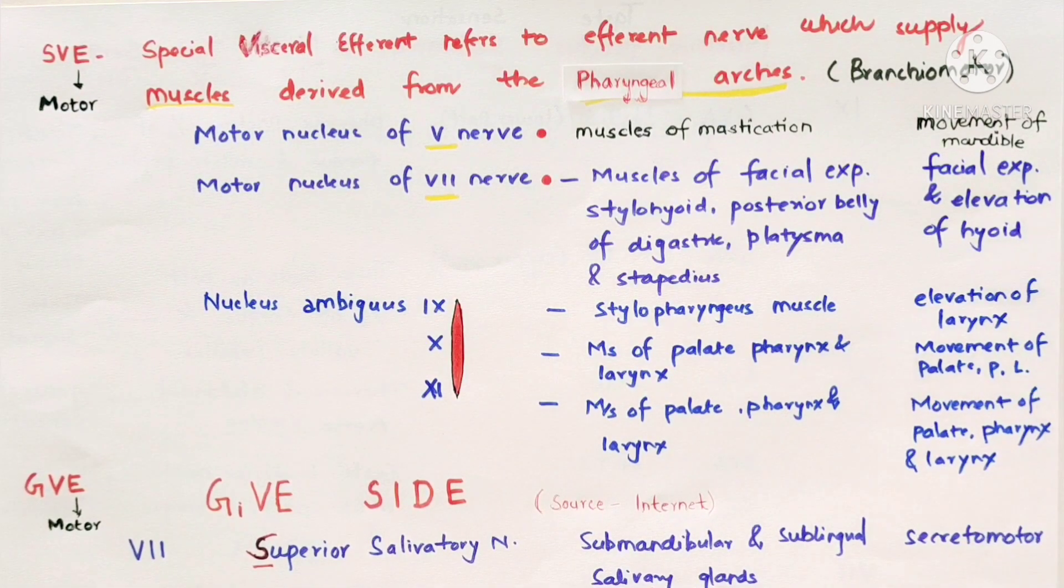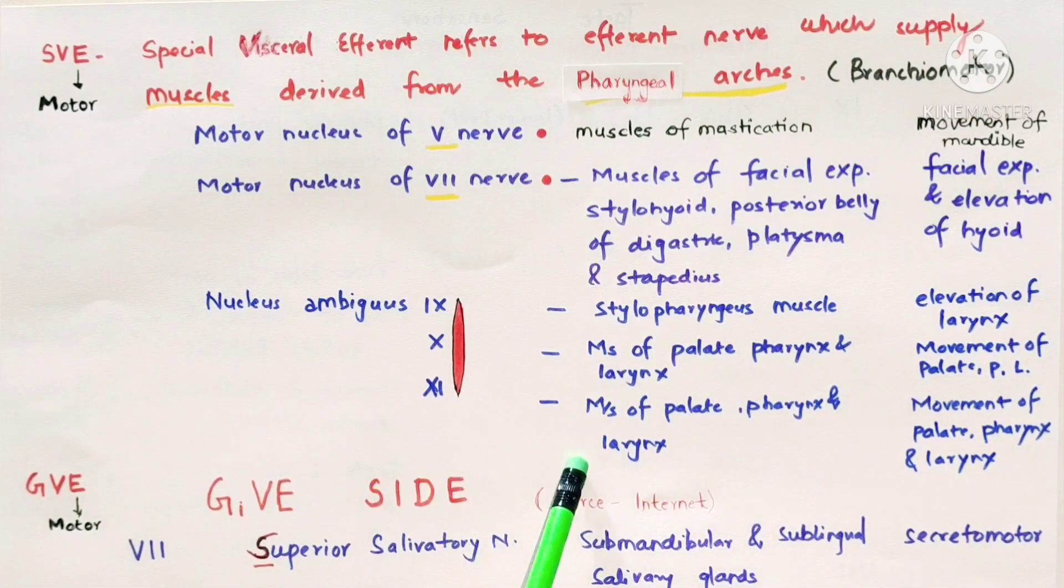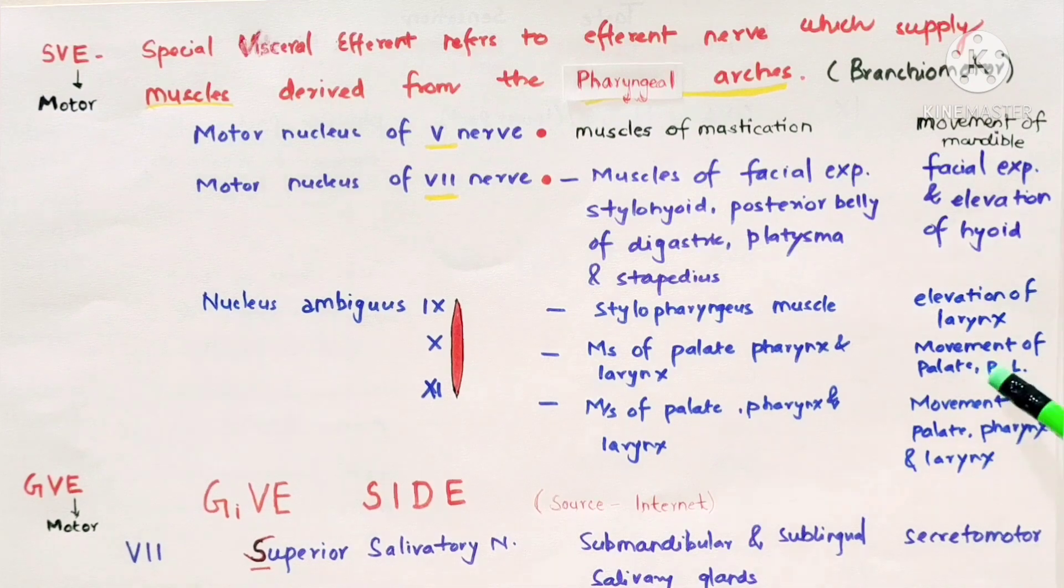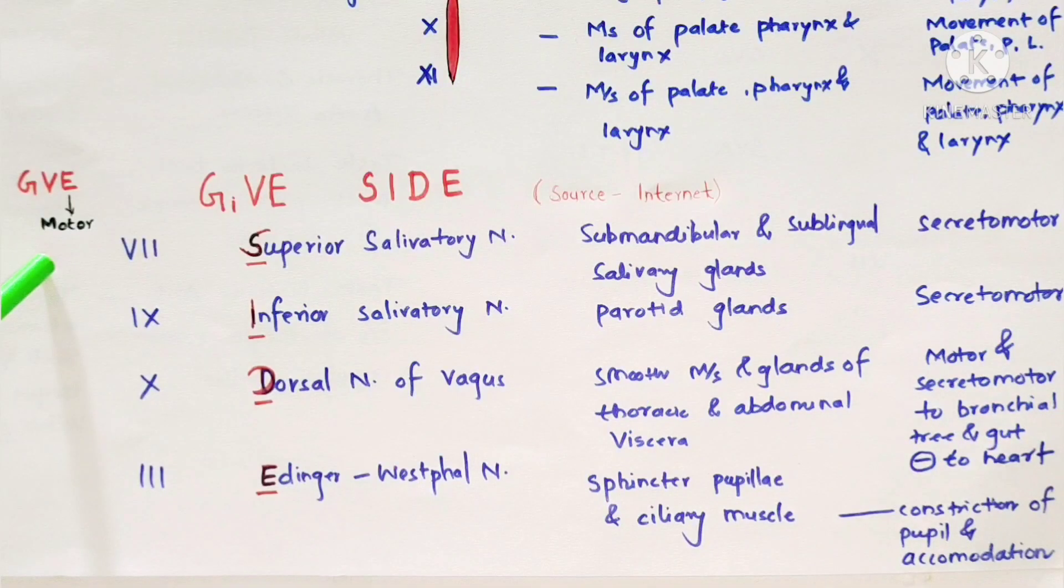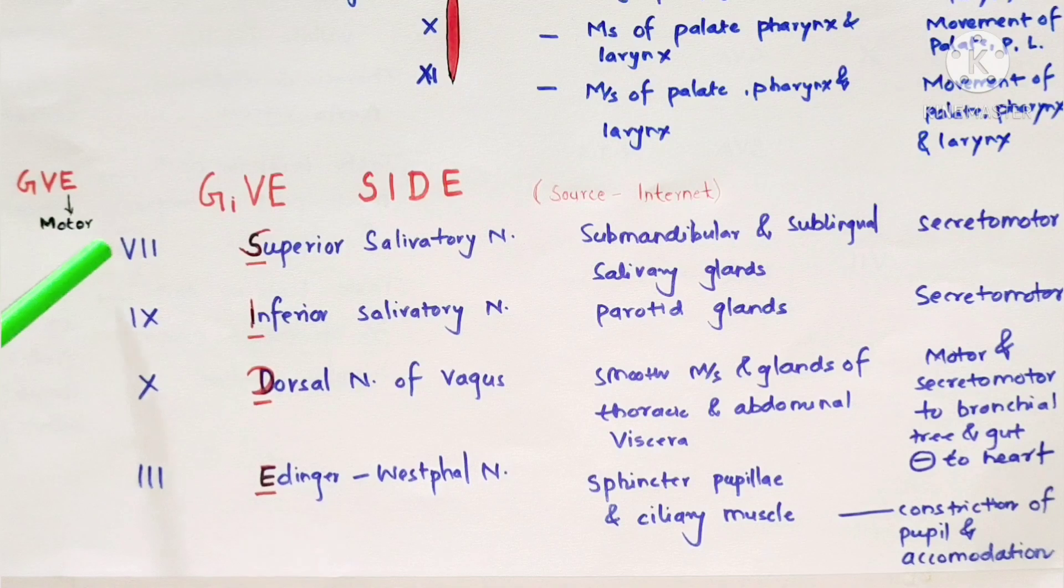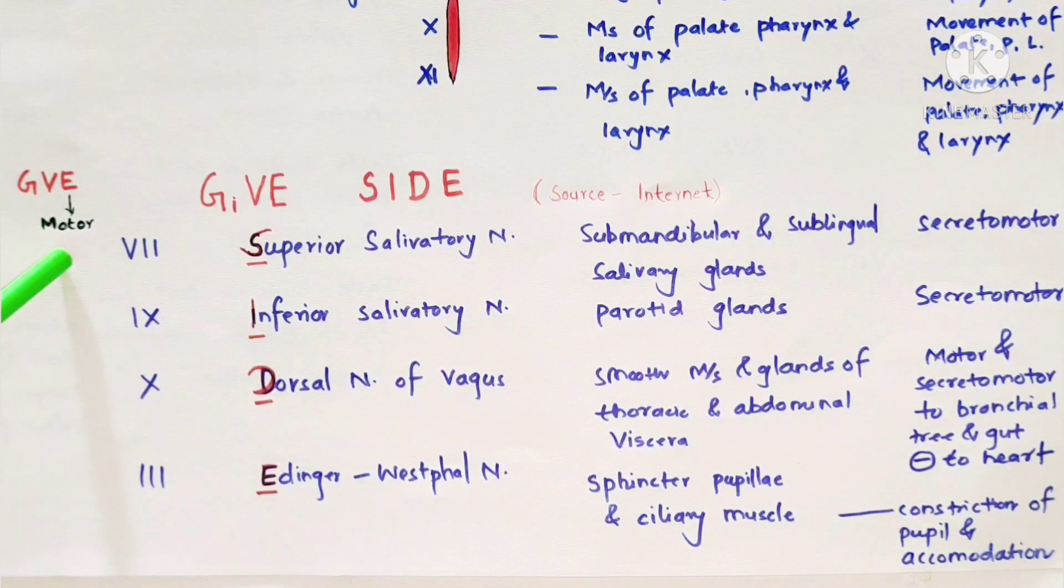Glossopharyngeal nerve supplies stylopharyngeal muscle with function of elevation of larynx. Vagus nerve supplies muscles of palate, pharynx and larynx functioning in movement of these structures. Accessory nerve supplies muscles of palate, pharynx and larynx with similar movement function.